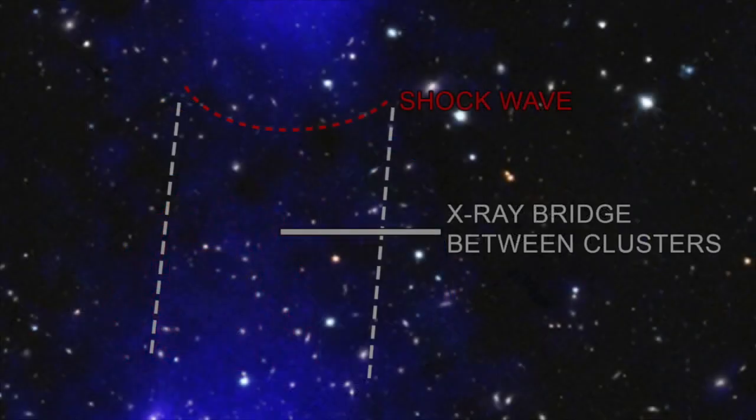The shockwave and the hot intergalactic medium discovered in ABL-98 are almost certainly connected. What's probably happened is the shockwave has heated gas that was already present between the clusters, raising the temperature to the point at which it gives off X-rays that can be seen by Chandra.